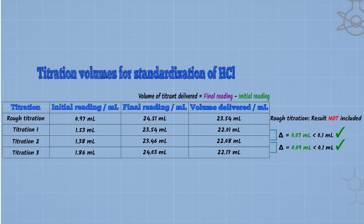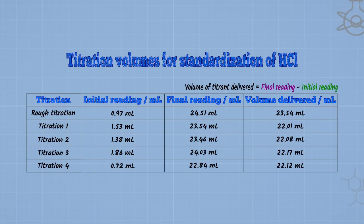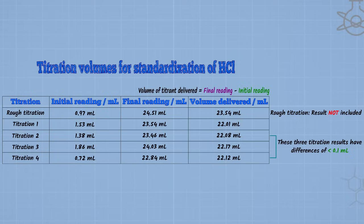To get precise results, your volume of titrant delivered for the three non-rough titrations should be 0.1 milliliter difference between each titrant volume delivered. If this is not the case, additional titrations will be performed to get precise results.